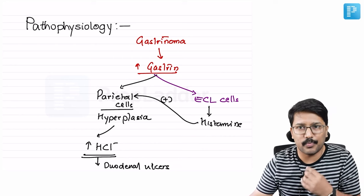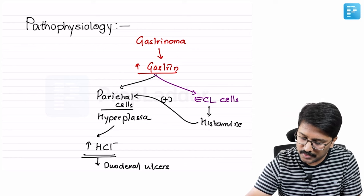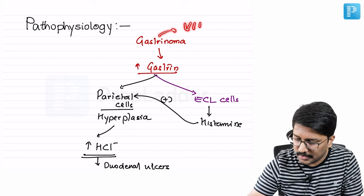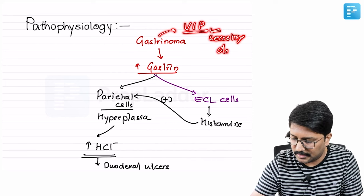The third possibility why these patients may have diarrhea, not all cases but some subset of patients, is these gastrinomas may also express or secrete vasoactive intestinal peptide. That can also contribute to secretory diarrhea.